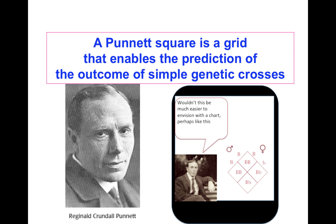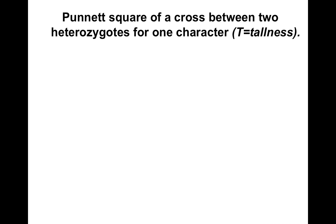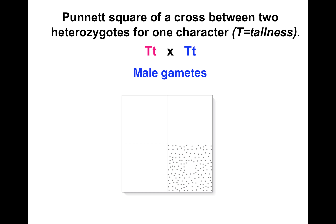Along came Reginald Punnett several years later and said, wouldn't this be much easier to envision with a chart? And thus were born the Punnett squares. A Punnett square of a cross between two heterozygotes for one character looks something like this. Convention has it that we put the male gametes across the top of our grid. Remember, the gametes are haploid, so they're only going to have one copy of that allele for each of the genes.